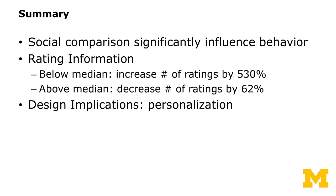To summarize, we find that social comparison — this type of social information — significantly influenced behavior, especially for those who were previously below median. These are the laggards, and they increased their ratings by 530%. For the above-median users, their ratings decreased by 62%. It's considered a fairly successful experiment. The main message from a design perspective is: collect information before your intervention and use that for blocking, and also use that information for the analysis in the form of diff-in-diff analysis.